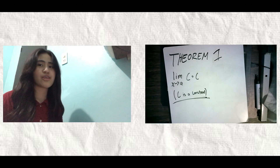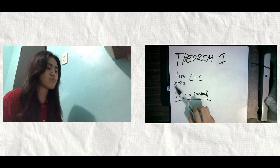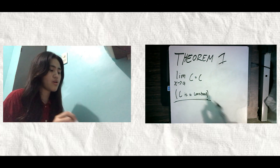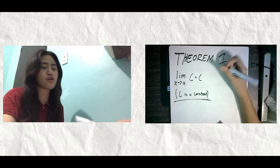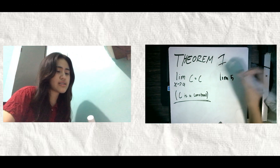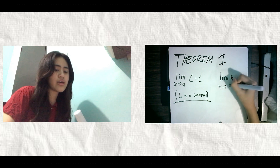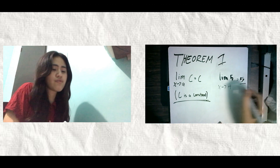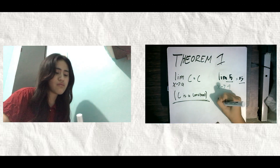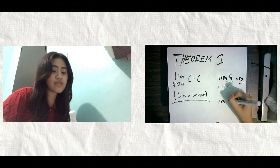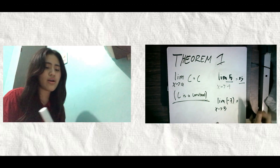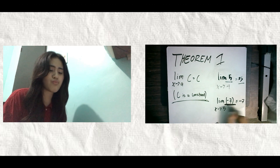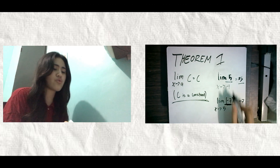First, Jay Lakap. So, in theorem 1, the limit of c as x approaches a is equal to c, wherein c is a constant. For example, the limit of 5 as x approaches 4 is equal to 5, because 5 is our constant. Number 2: limit of negative 7 as x approaches 5 is equal to negative 7, because negative 7 is our constant. That's how simple theorem 1 is.